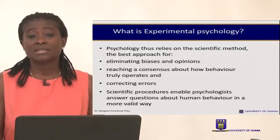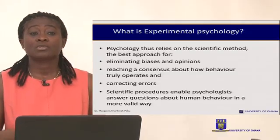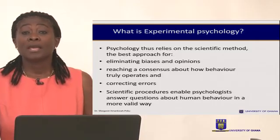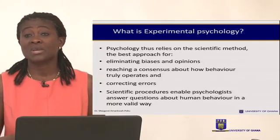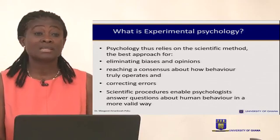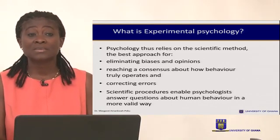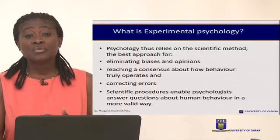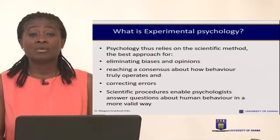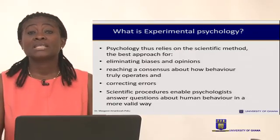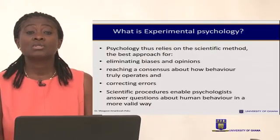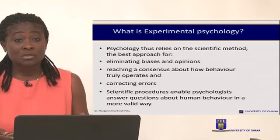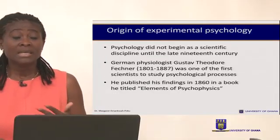The scientific method helps us reach a consensus about how behavior truly operates, because we are testing variables, controlling for variables, and measuring variables. It also helps us correct errors — for instance, people may have different perceptions about same-sex relationships or about teenagers and how they interact with older people. When we do research we are able to remove errors in thinking, and the scientific procedure enables psychologists to answer questions concerning human behavior in a more valid and objective way.